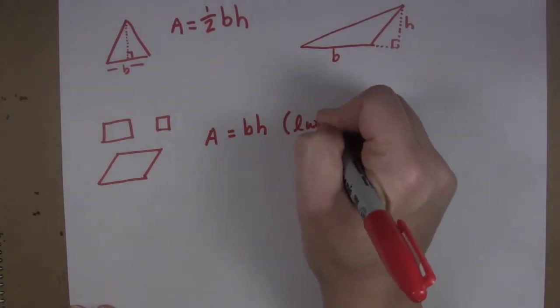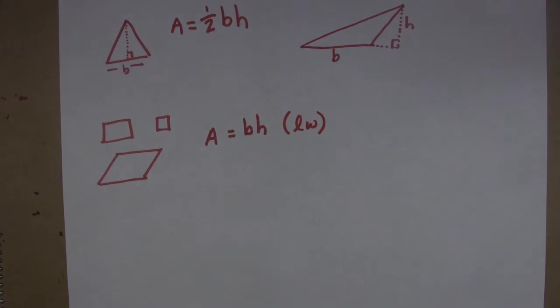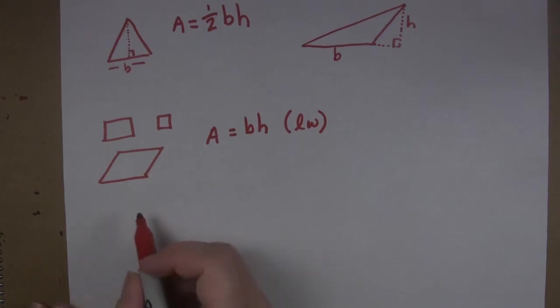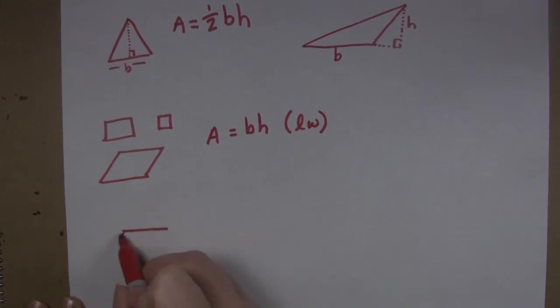Sometimes I think of it as length times width because that's the way I learned it when I was in grammar school and that is seared into me. But base times height is going to get you where you need to be for all of these types of shapes. Now we do have another odd type of shape and that is the trapezoid.